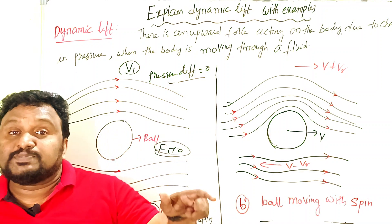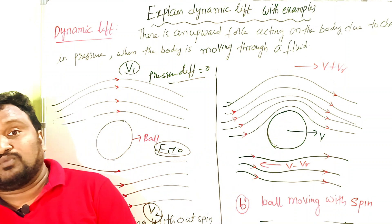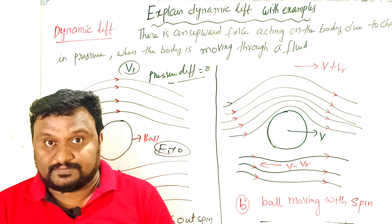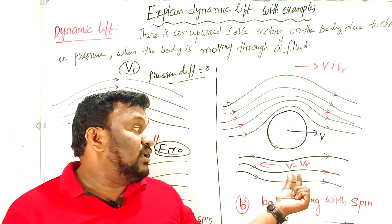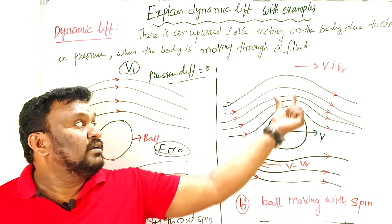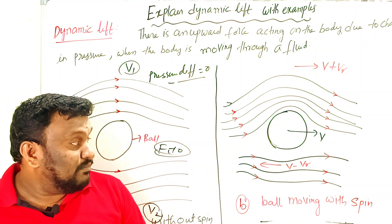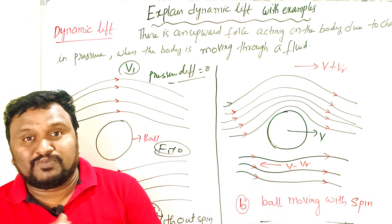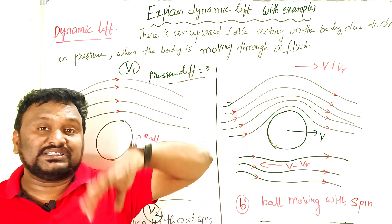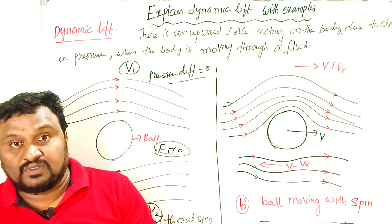When the ball is moving with velocity V and also spinning, the velocity above the ball becomes V plus Vr, and below the ball it becomes V minus Vr, where Vr is the velocity due to spin. As a result, the streamlines above the ball are very close together — crowded — and the streamlines below the ball are more separated — rarefied. Where streamlines are closer, velocity is greater; where they are more separated, velocity is less.